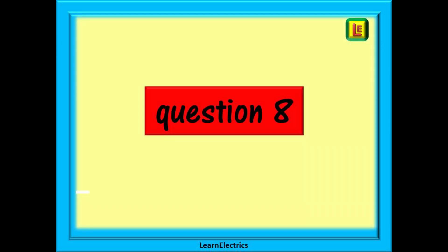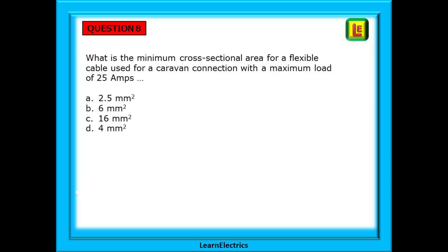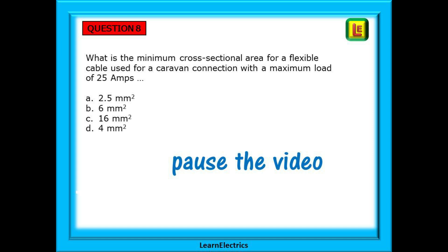Question 8: what is the minimum cross-sectional area for a flexible cable used for a caravan connection with a maximum load of 25 amps? Pause the video, find the keywords, and write down the answer.